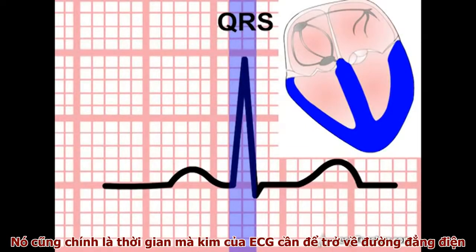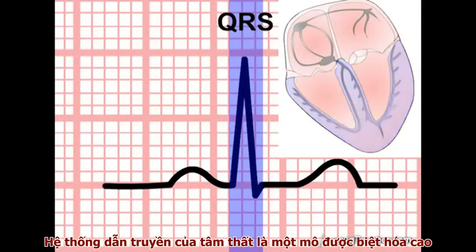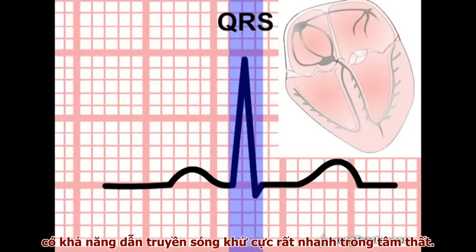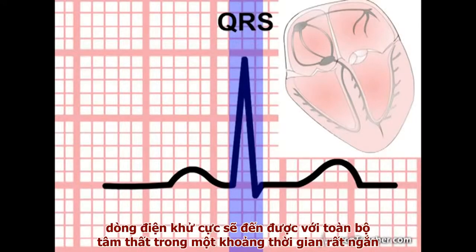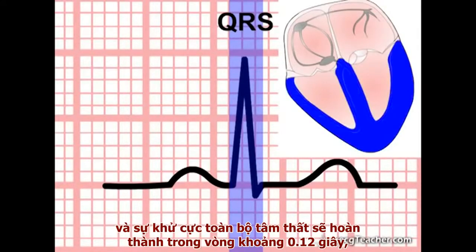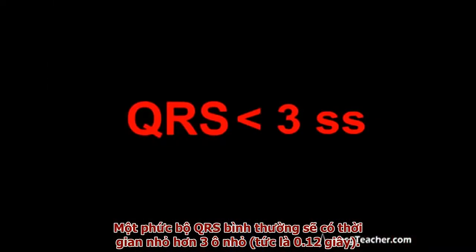The QRS duration also includes the time taken for the recording needle to return to baseline when the flow of depolarizing current in the ventricles has ceased. The conducting system of the ventricles is highly specialized tissue capable of transmitting the depolarization wave rapidly around the chambers. With an intact conducting system, depolarizing current is delivered to all sectors of the ventricles in a very short time period, and ventricular depolarization of all regions is complete within 0.12 seconds — that is, three small squares.